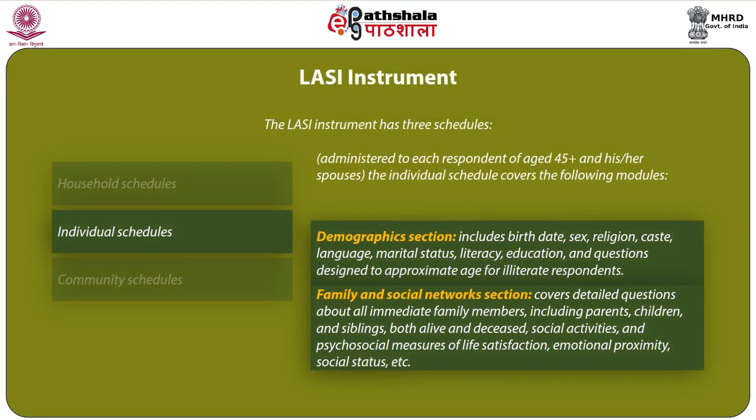The second schedule is the individual schedule, administered to each respondent aged 45 and above and his or her spouse. It covers: a demographic section including birth date, sex, religion, caste, language, marital status, literacy, education and questions to approximate age for illiterate respondents; a family and social network section covering detailed questions about all immediate family members including parents, children and siblings both alive and deceased, social activities and psychological measures of life satisfaction, emotional proximity, and social status.